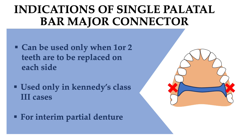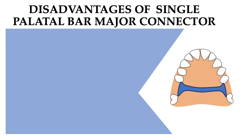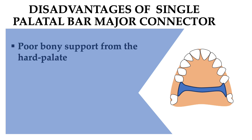It is also used for interim partial dentures. The disadvantages of the single palatal bar major connector include poor bony support from the hard palate, because its anterior-posterior width is narrow. That is why it is not used in large edentulous areas.